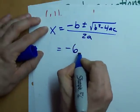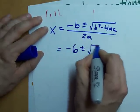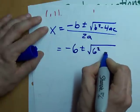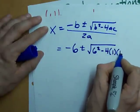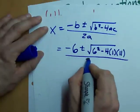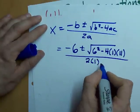B was 6. Plus or minus the square root of b squared minus 4. a was 1. c was 11. All over 2 times a. a was 1.